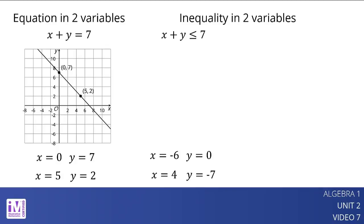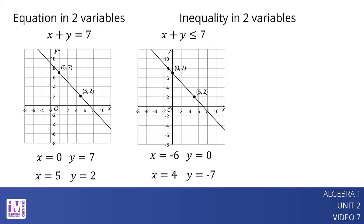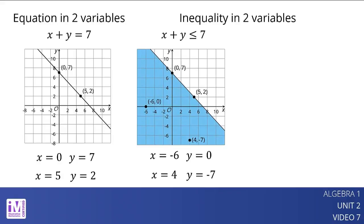On a coordinate plane, the solution to x plus y is less than or equal to 7 includes the line that represents x plus y equals 7. If we plot a few other pairs that make the inequality true, such as negative 6 comma 0 and 4 comma negative 7, we see that these points fall on one side of the line. In contrast, pairs that make the inequality false fall on the other side of the line. We can shade that region to indicate that all points in it are solutions.